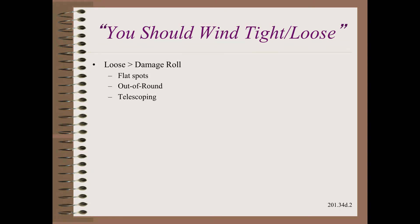Loose defects tend to damage the roll by allowing it to lose a desired cylindrical shape. Flat spots from floor storage or egg shapes from core support storage are just a few examples. Of course, it is our customer who defines how good the cylinder must be, and hopefully our web and winder can achieve that.